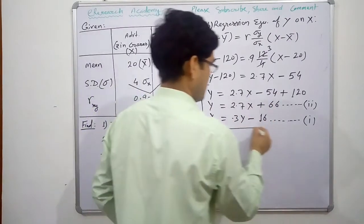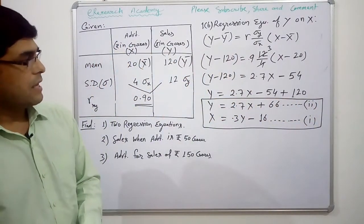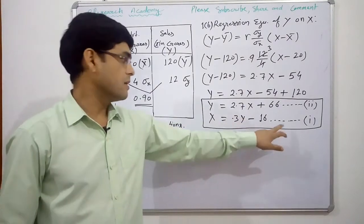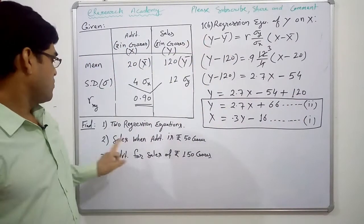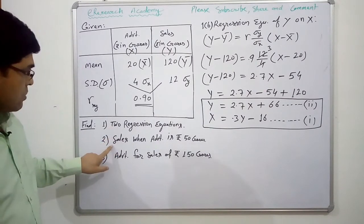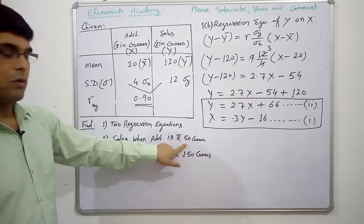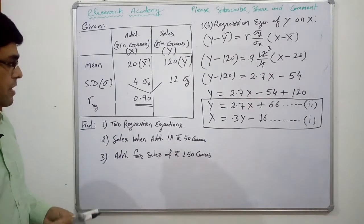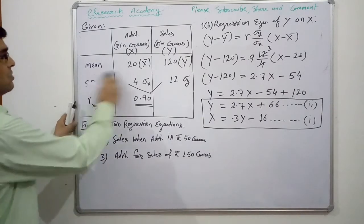So these two are our regression equations. The first one is X on Y: X equals 0.3Y minus 16. The second one is Y on X: Y equals 2.7X plus 66. The first part of the question is now done. Now we have to find sales when advertisement is Rs.50 crores.